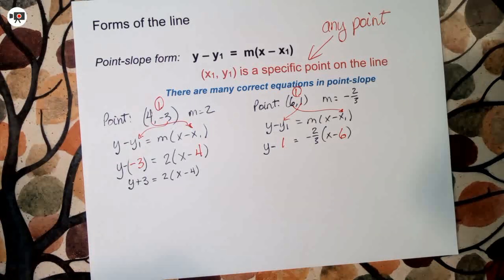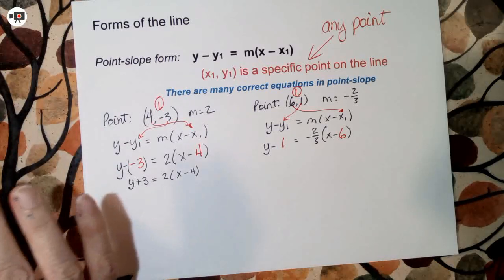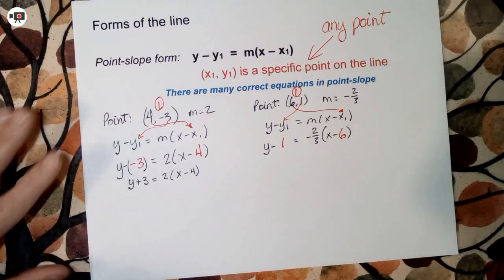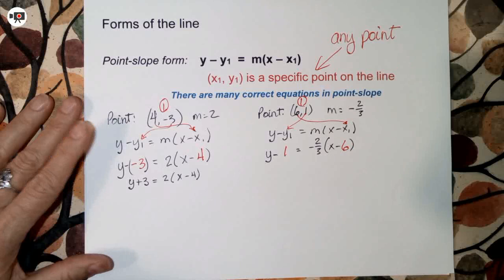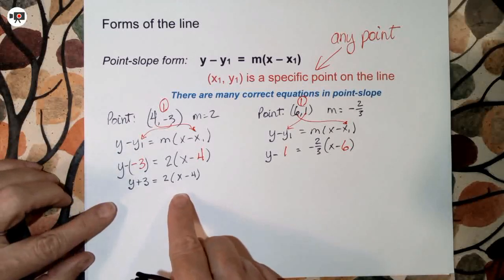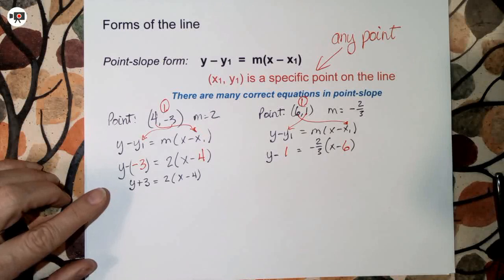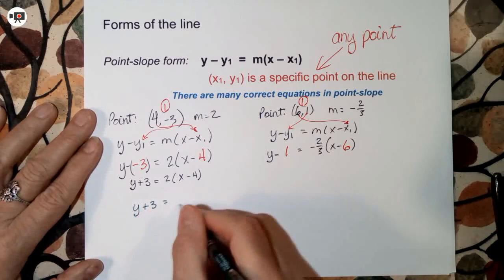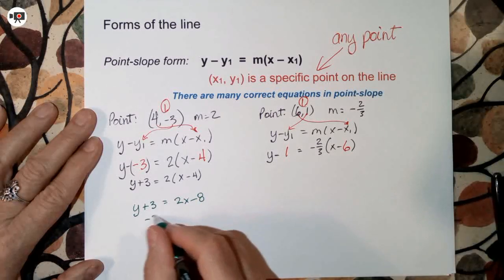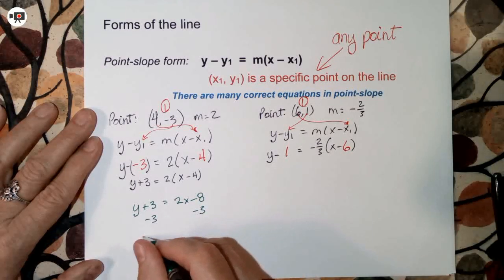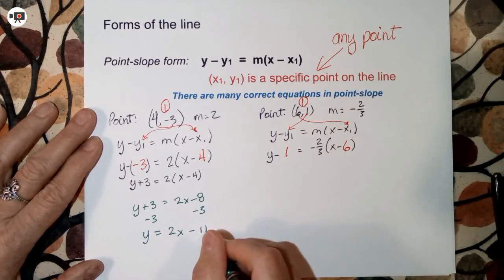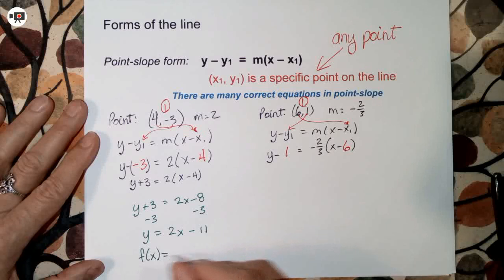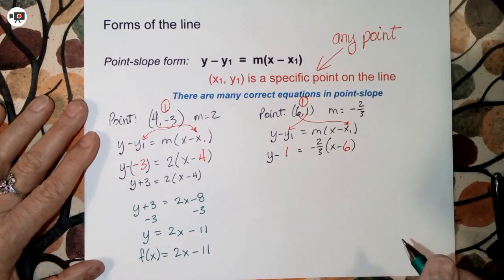Sometimes you're going to want it in a different form — function form, y equals mx plus b. To do that, recall that function form's main characteristic is that y is isolated. So if you're going to make it into function form, you just isolate y. Go ahead and get rid of the parentheses, then isolate y by subtracting 3, so you'll have y equals 2x minus 11. This is function form. We often write function form with f(x) instead of y, and both of these are correct for function form.